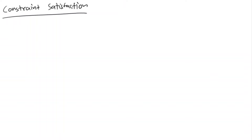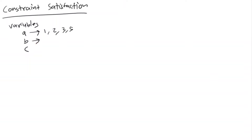Let me give you a concrete example. I'll pick three variables: a, b, and c. Variable a can take on the values 1, 2, 3, and 5. b can take on the values 1, 2, 7, and 8. And c can take on the values 1, 8, and 10.